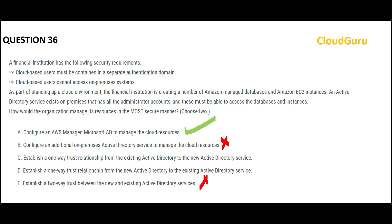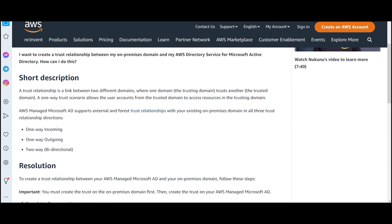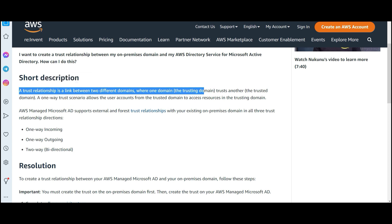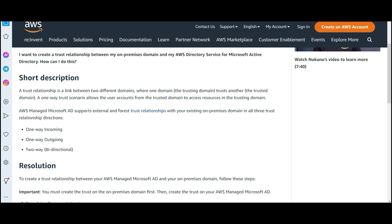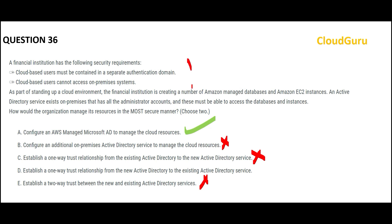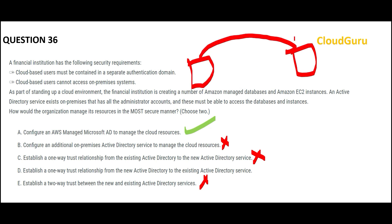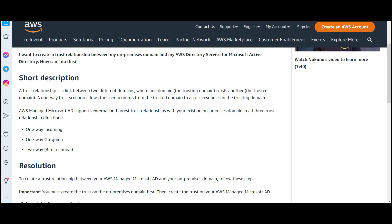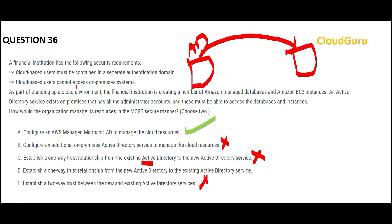Options C and D are confusing, so let me clarify. According to the documentation, a trust relationship is a link between two domains — a trusting domain and a trusted domain. In our case, on-premises is the trusting domain. Under option C, the existing on-prem AD becomes the trusting domain and trusts the cloud — meaning user accounts from the cloud can access on-prem resources. But the question says cloud-based users should not access any on-prem systems. That is why C is wrong, and D is the correct answer. So my two final answers are A and D.